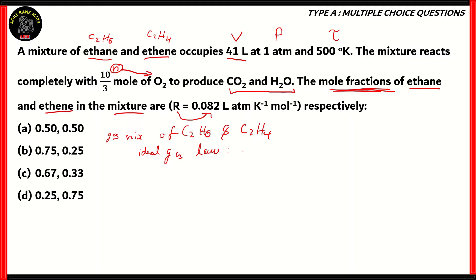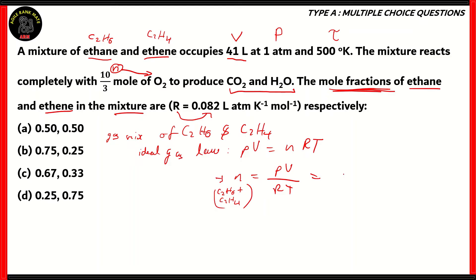According to the ideal gas law, PV = nRT, where P stands for pressure, V stands for volume, R stands for universal gas constant, T stands for temperature, and N stands for number of moles. Now we'll be finding out the number of moles for the C2H6 plus C2H4 mixture. Putting in the given values: pressure is 1 atmosphere, volume is 41 liters, universal gas constant is 0.082, and temperature is 500 degrees Kelvin.